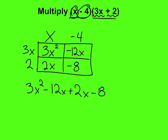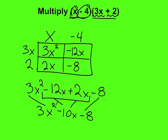The last thing we need to do is combine all like terms to simplify completely. We have negative 12x plus 2x, which equals negative 10x. There's nothing to combine the minus 8 with, and nothing to combine the 3x squared with. So we end with 3x squared minus 10x minus 8.